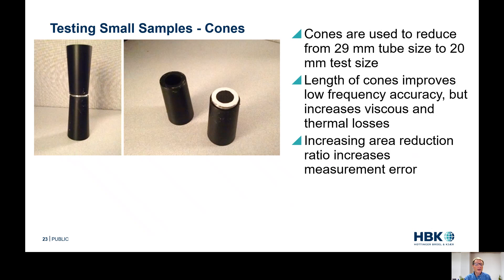For testing small samples, we needed a 20-millimeter test size, so we used cones to reduce from the 29-millimeter standard tube down to 20-millimeter ID. The length of the cones is important: having longer length improves low-frequency accuracy — the more gentle the cone, the less correction required at low frequency. But it also increases viscous and thermal losses, which normally aren't important with a 100-millimeter or 29-millimeter tube, but become significant when testing smaller sizes.